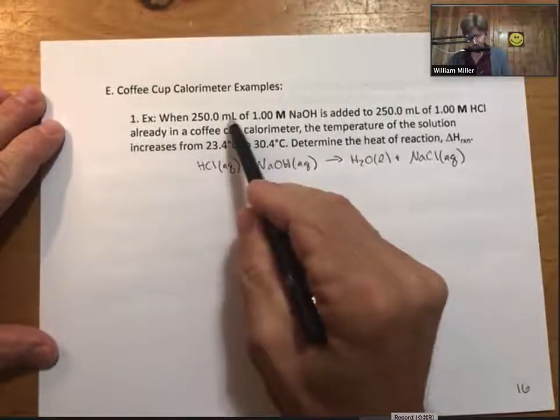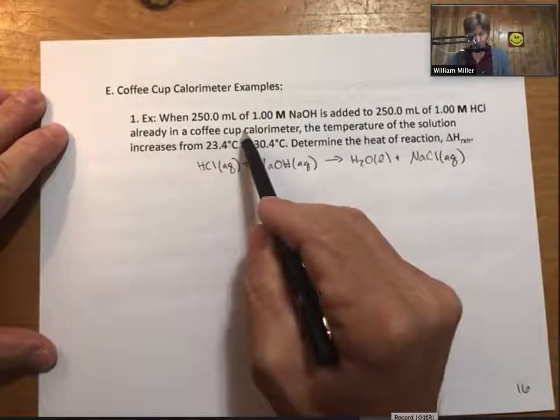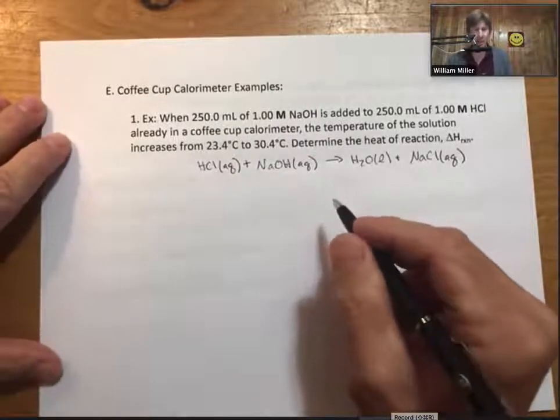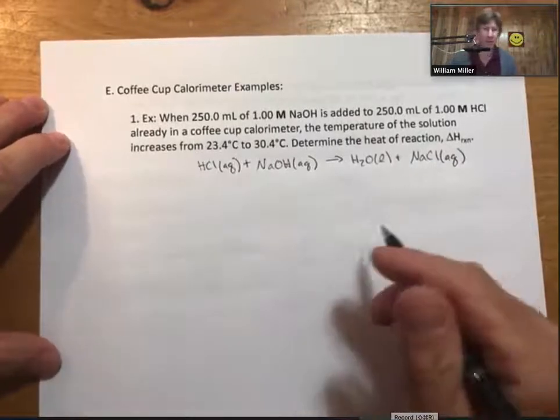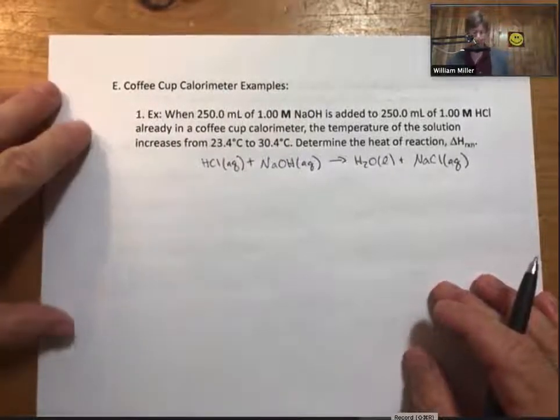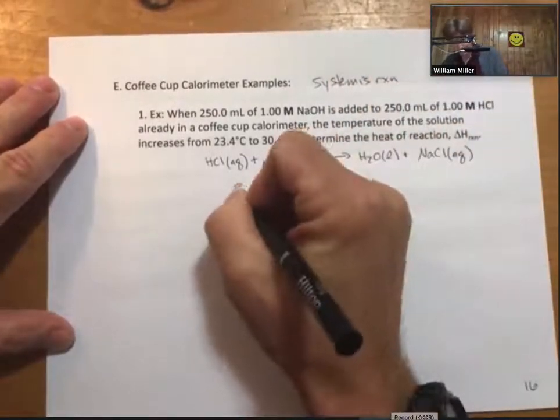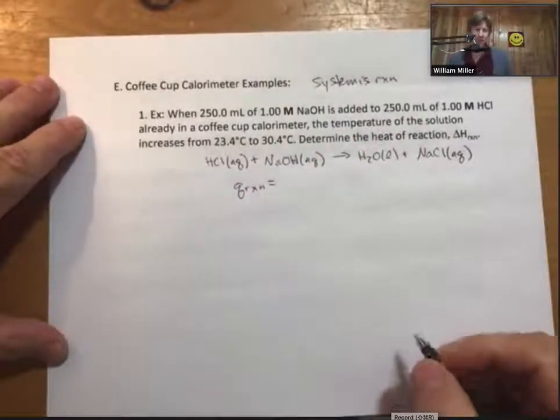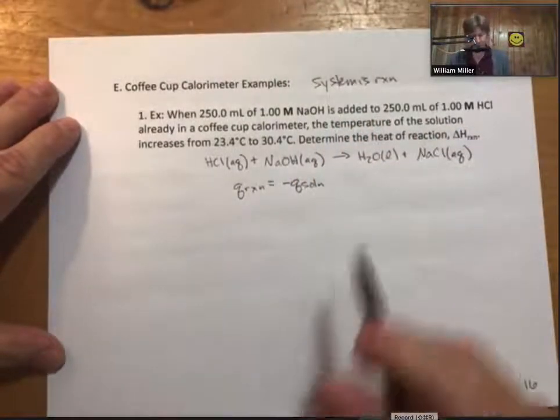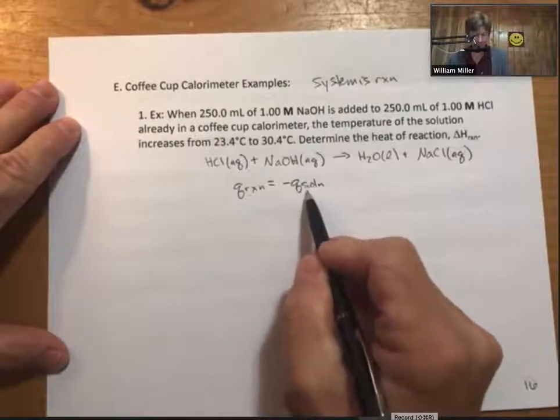It's going to be hydrochloric acid plus sodium hydroxide reacts to produce water and sodium chloride. We have volume and molarity of sodium hydroxide, same information for hydrochloric acid. We mix them together in a coffee cup calorimeter, the temperature increases from 23.4 to 30.4 degrees. We need to determine the heat of reaction. There's definitely a reaction, and I'll give you the balanced reaction as part of the problem.